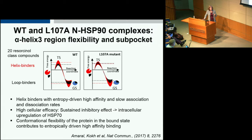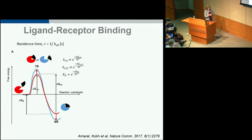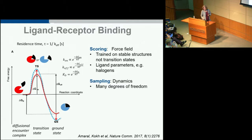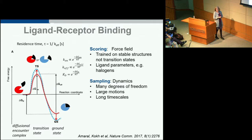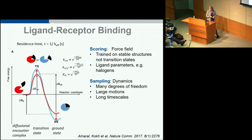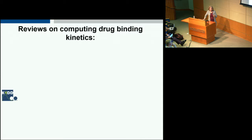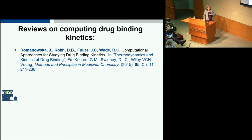From a computational perspective, what I've shown so far is studying the bound state. But really we need to consider the transition state as well, which is difficult because force fields are generally trained on bound states. There can also be ligand parameter issues like those I showed for halogens, and sampling is trickier for greater flexibility. Going back to the beginning of the K4DD project, when we wrote our initial review on drug binding kinetics, there was hardly anything in the literature about computations of drug binding kinetics for drug-like molecules.